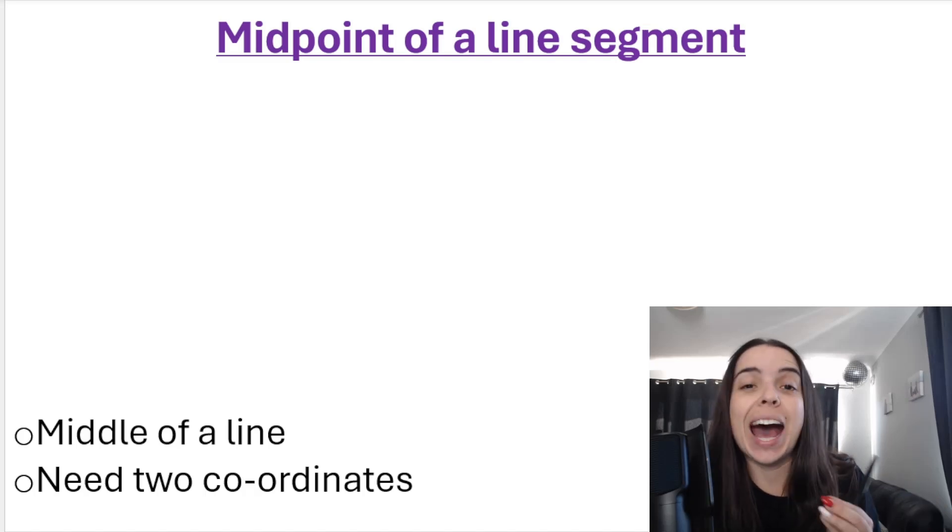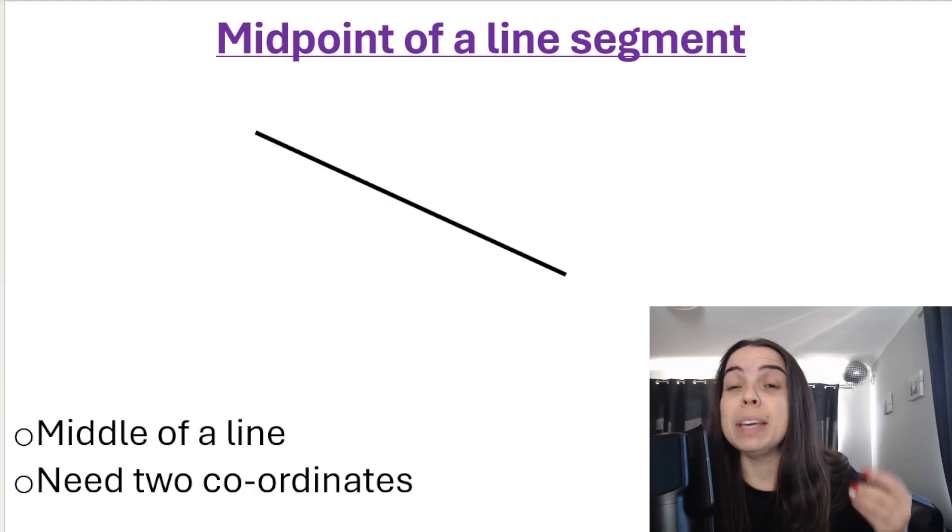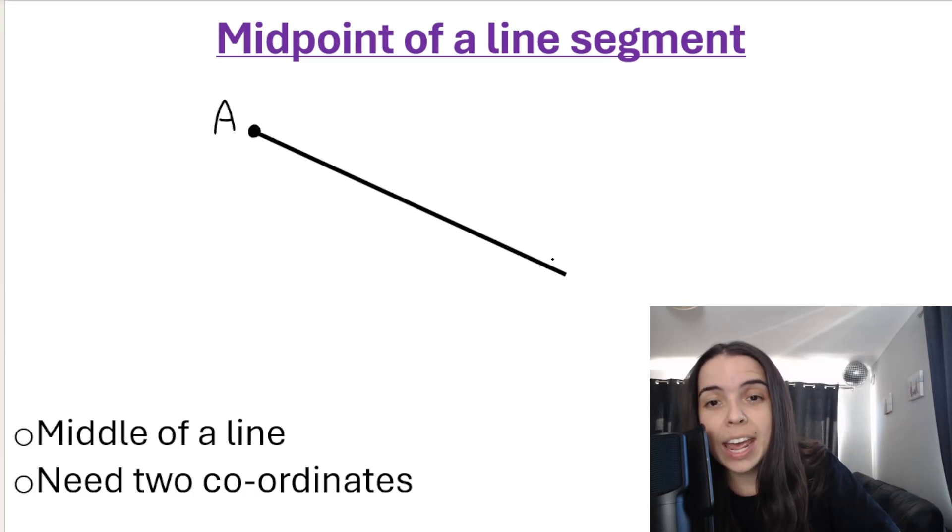In this lesson, we are going to take a look at how to determine the midpoint of a line segment. When I say a line segment, I mean a straight line like that. Let's say that this coordinate over here is coordinate A, and this coordinate over here is coordinate B.